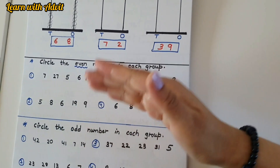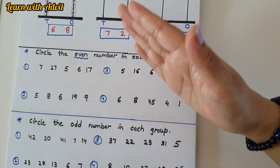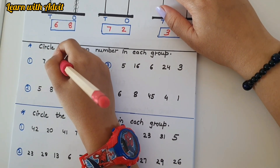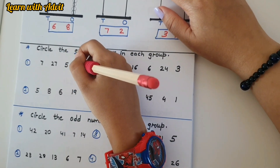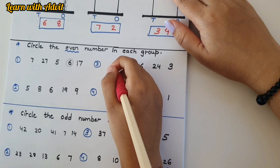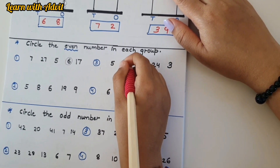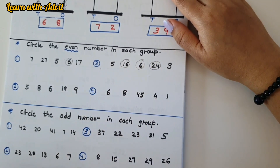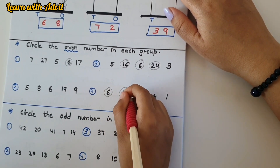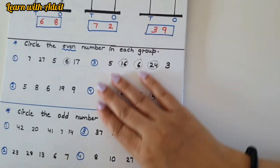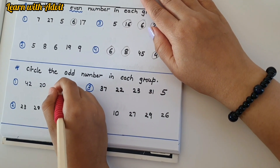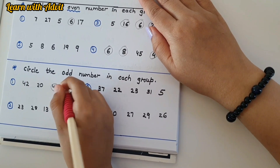Circle the even numbers in each group. Even numbers can be divided equally into two. Circle all even numbers: this is odd, this is odd, this is odd, this is odd, this is even. Even, odd, even, even, even — good! Now circle the odd numbers in each group: even, even, odd, odd — very good!